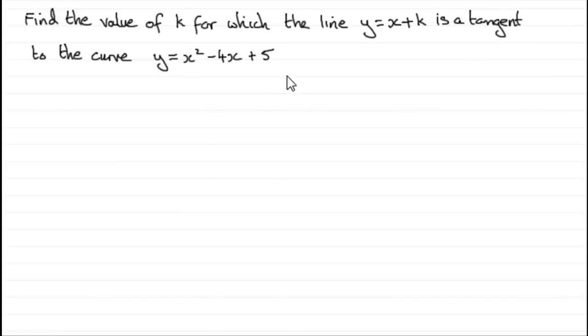To get an appreciation of this kind of question, I would suggest you try and sketch this. If we look at our curve, the quadratic curve y equals x squared minus 4x plus 5, we've got a curve that crosses the y-axis when x is 0, making y equal to 5.